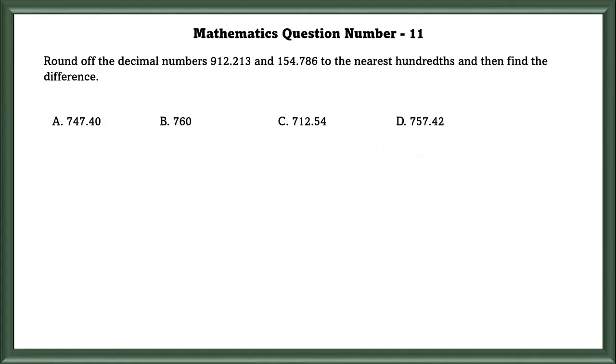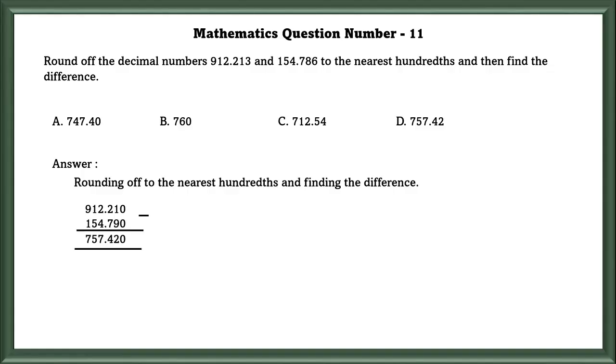Mathematics Question No. 11: Round off the decimal numbers to the nearest hundredths and then find the difference. If we round off and find the difference, we will get 757.420. That is in the B option.